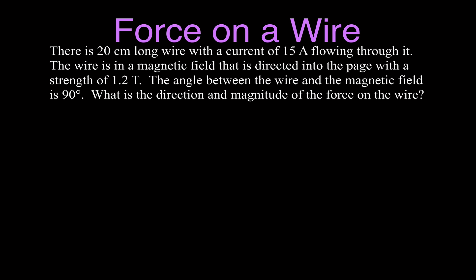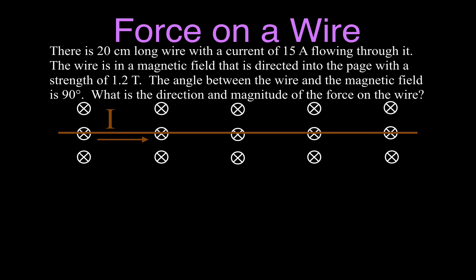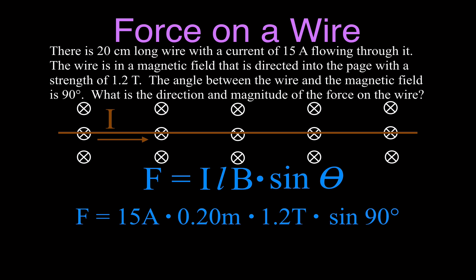We can draw a quick picture. The current is flowing from left to right across the page. The magnetic field, shown with X's, means it is directed into the page. We want to know the direction and the magnitude of the force. For the magnitude, we use our equation: force equals I times L times B times sine of theta. Plugging in: 15 amperes, 0.2 meters (converting 20 centimeters), times 1.2 teslas, times sine of 90, which equals 1. The magnitude of the force on that wire is 3.6 newtons.